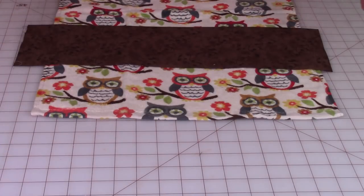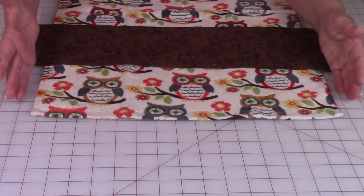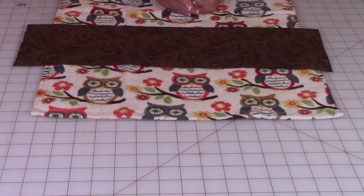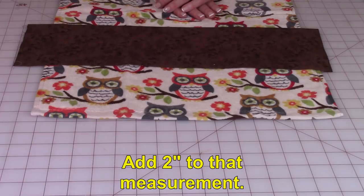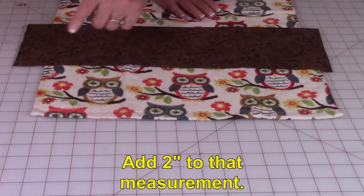The first step is to measure the width of your towel. This one is 16 inches. Then add 2 inches. So I'm going to need to cut a piece of fabric that's 18 inches long.